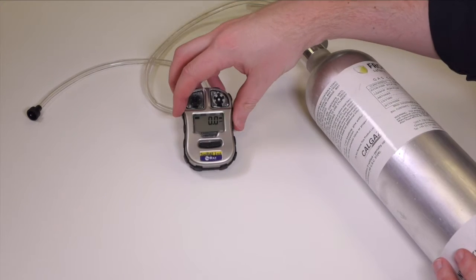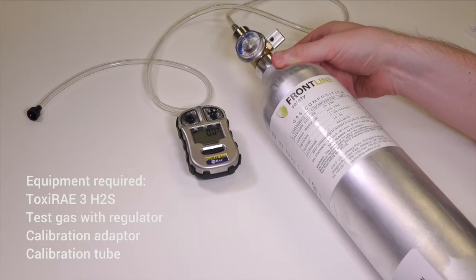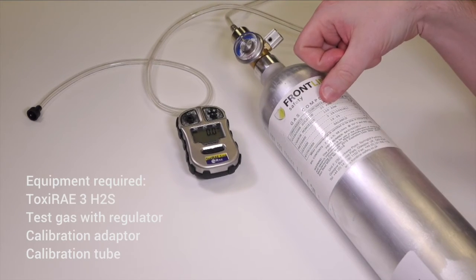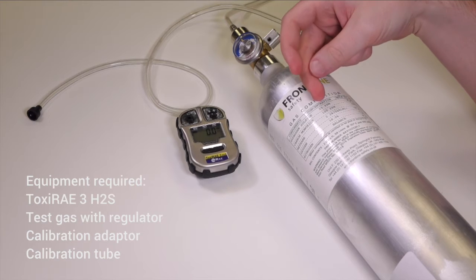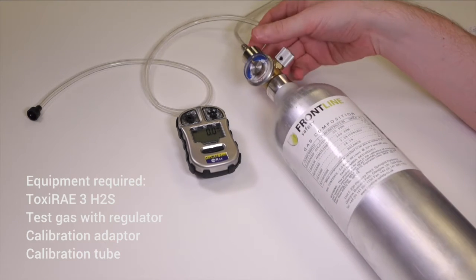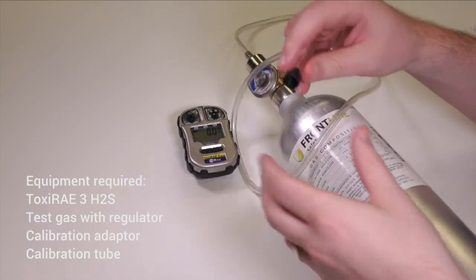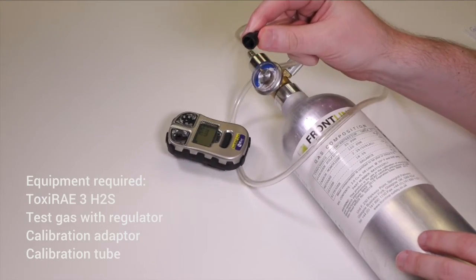So to calibrate manually you'll need the ToxiRAE itself, the cylinder of gas which should have the known concentration of H2S in it, in this case 25 ppm, you'll need a regulator as well, calibration tubing, and the calibration adapter which comes with the unit.